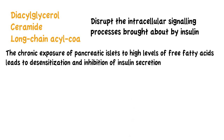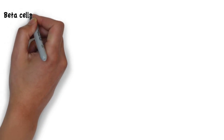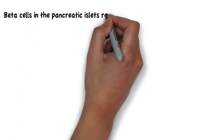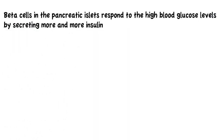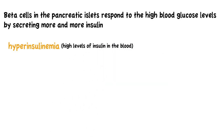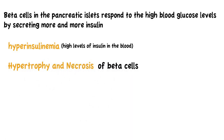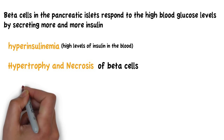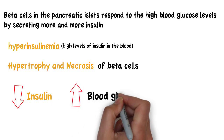This results in high levels of circulating glucose, since the glucose is not able to be taken up by the cells. Beta cells in the pancreatic islets respond to high blood glucose levels by secreting more and more insulin, leading to hyperinsulinemia — meaning having high levels of insulin in the blood. It also leads to the hypertrophy and necrosis of beta cells. With beta cell damage and cell death, less insulin is secreted, which will further contribute to elevated blood glucose levels.